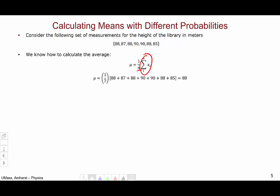In this example, we would add up 88, 87, 88, 90, 90, 88, and 85, and divide by seven to get an average of 88. But we see in this data set that each result appears to not be equally probable. 88 occurs three-sevenths of the time, and 90 occurs two-sevenths of the time.